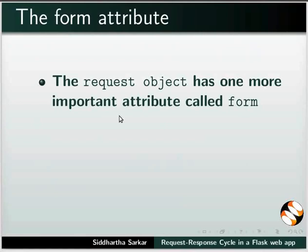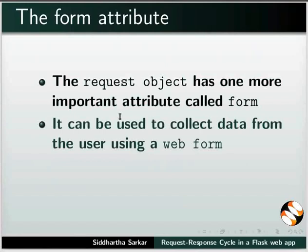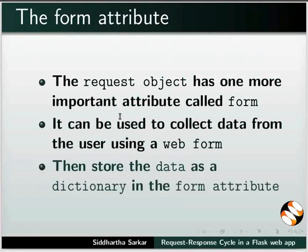The request object has one more important attribute called form. It can be used to collect data from the user using a web form, and then store the data as a dictionary in the form attribute. Let us look at an example of how form data can be sent and received using the request object.